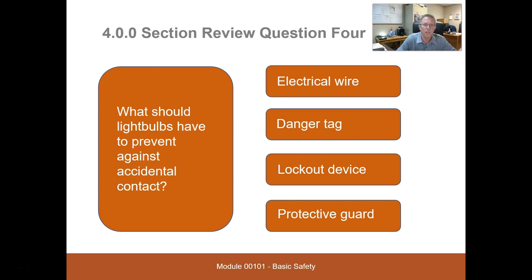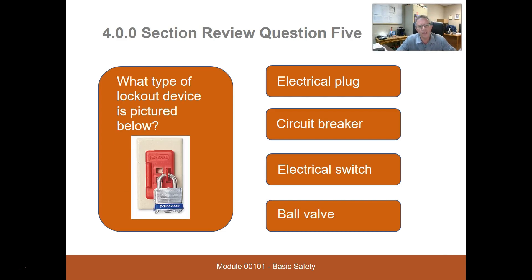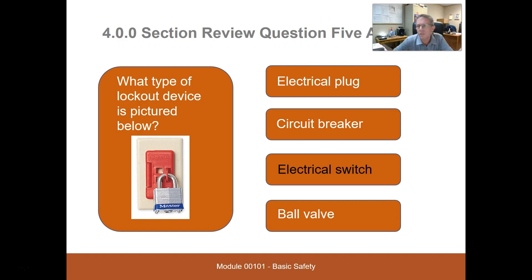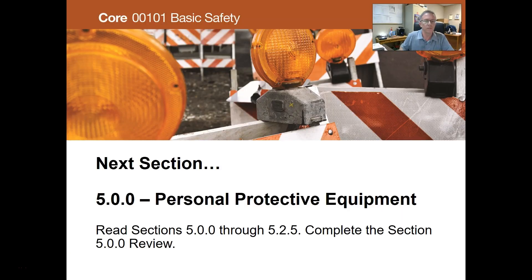'What should light bulbs have to prevent accidental contact?' — A protective guard. 'What type of lockout device is pictured?' — An electrical switch lockout with a lock through it on a single-pole switch. The key takeaway is there's a lock or tag made for anything you could run into in the field. If there isn't one, you've got to find a way to block it out — lock, tag, block out all forms of stored energy. That's it for this section.